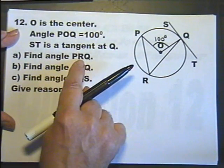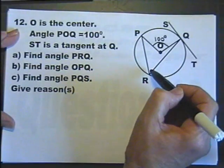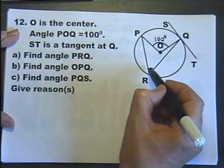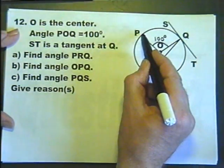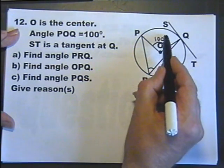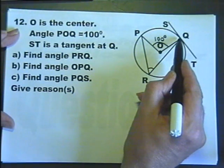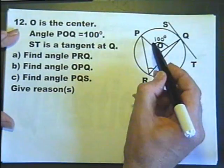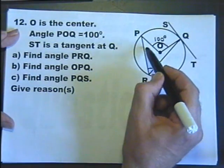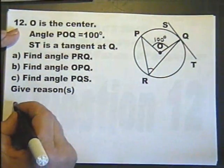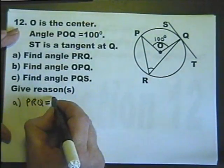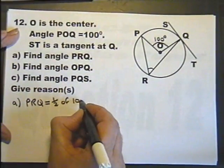Find the angle PRQ. This is called the angle subtended at the circumference, and this is the angle subtended at the center. We can say on the chord PQ or on the arc PQ. That's a theorem: the angle subtended at the center is twice the angle subtended at the circumference. So PRQ is half of 100 degrees, which is 50 degrees.